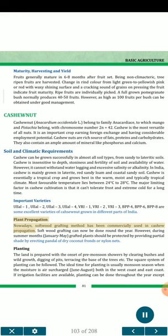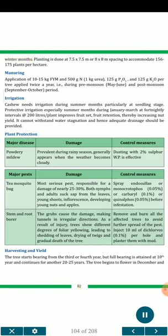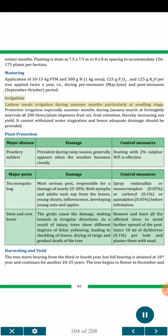Plant Propagation: Softwood grafting is commercially used in cashew propagation and can be done round the year. However, during summer months (January–May), grafted plants should be protected by providing partial shade using dry coconut fronds or nylon nets. Planting: The land is prepared with the onset of pre-monsoon showers by clearing bushes and wild growth, digging pits and terracing. The square system of planting can be followed. The ideal time for planting is monsoon season (June–August). If irrigation facilities are available, planting can be done throughout the year except winter months. Planting is done at 7.5×7.5 m or 8×8 m spacing to accommodate 156 to 175 plants per hectare. Manuring: Application of 10–15 kg FYM and 500 g N (1 kg urea), 125 g P₂O₅ and 125 g K₂O per tree twice a year — during pre-monsoon (mid-June) and post-monsoon (September–October) period. Irrigation: Cashew needs irrigation during summer months particularly at seedling stage. Protective irrigation during January–March at fortnightly intervals at 200 litres/plant improves fruit set and nut yield. It cannot withstand water stagnation and hence adequate drainage should be provided.